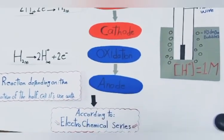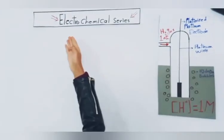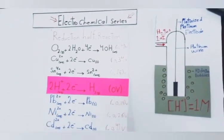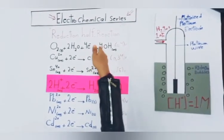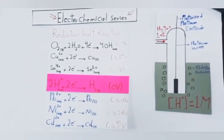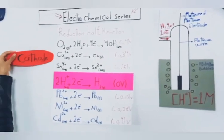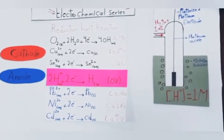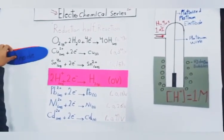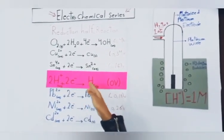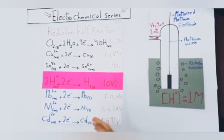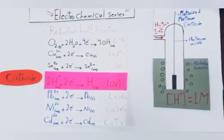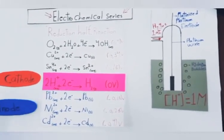According to the electrochemical series, when we look at the electrochemical series, if the other half-cell is above hydrogen in the electrochemical series, the other half-cell will act as the cathode and hydrogen will act as the anode. If the other half-cell is below hydrogen, the hydrogen will act as the cathode and the other half-cell will act as the anode.